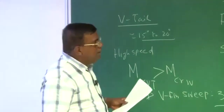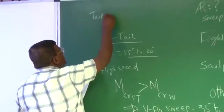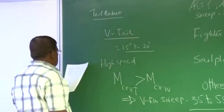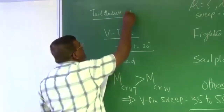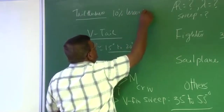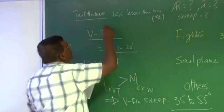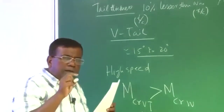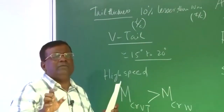Another point: as far as thickness ratio is concerned, typically the tail T/C will be roughly 10 percent thinner than the wing T/C. I am talking about T/C ratio — the tail will have a T/C about 10 percent less than the wing T/C — that is the general guideline.